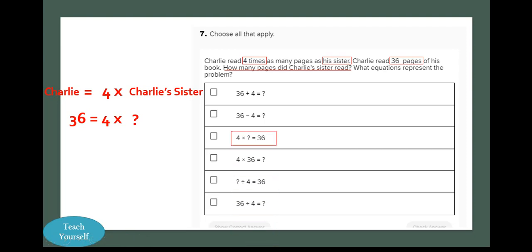So if we look at what we've just written out, 36 equals four times unknown is equivalent to the third option: four times unknown equals 36. Reversing both sides, we still get the same thing. And this multiplicative statement can be transformed into a division by writing 36 divided by four, then equals the unknown, which is Charlie's sister.